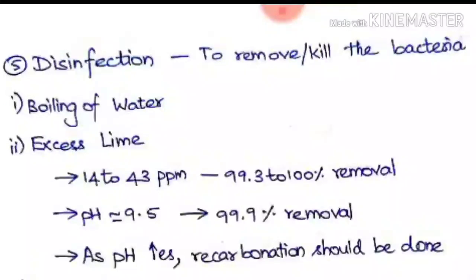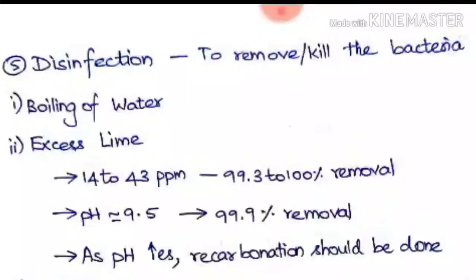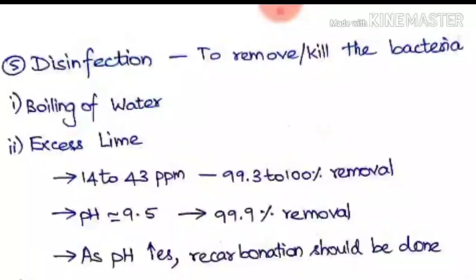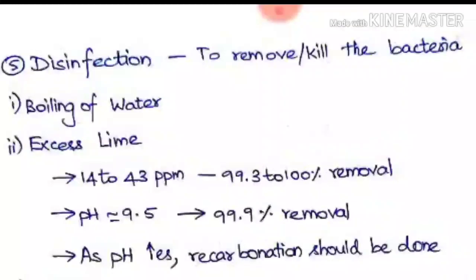The first minor method is boiling of water. If you just boil the water, the bacteria will be killed, but it cannot be used on a large scale. The next is excess lime. When excess lime is added to the water at nearly 14 to 43 ppm, nearly 99.3 to 100% removal of bacteria is possible, but the main problem is that the pH will be increased.